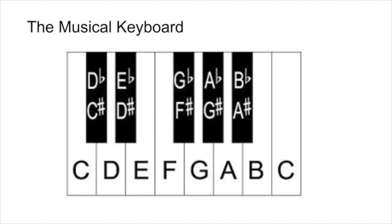The easiest way is to look and identify the groupings of two black keys. If we move to the white key that is just to the left of that, that is our note C. So as we walk through the musical alphabet, we can label the white keys C, D, E, F, G, A, B — and we would have landed right on another C.